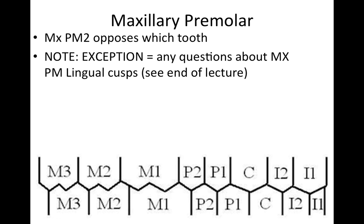For the lingual cusps of the maxillary posterior teeth: the lingual cusps oppose marginal ridges and central and distal fossae. If we look at this tooth as the lingual cusp, it's going to be sitting right there on the groove — the central groove.